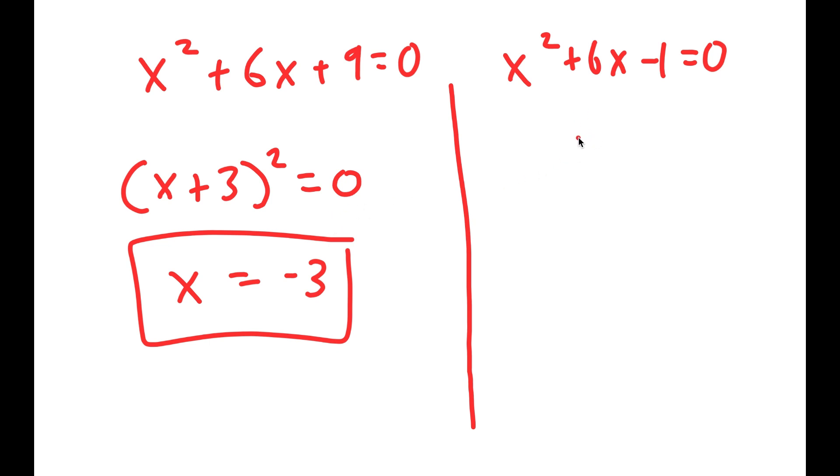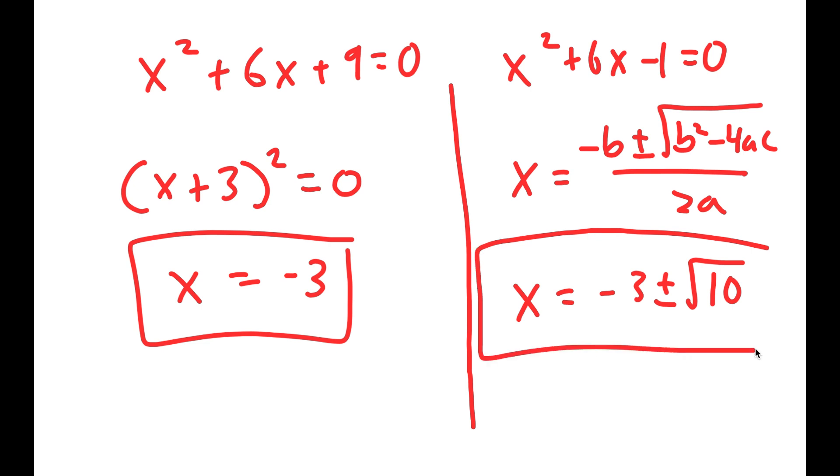For x² + 6x - 1 = 0, I can use the quadratic formula. The quadratic formula is -b ± √(b² - 4ac) all over 2a. If I plug these values into the quadratic formula, I get x equals -3 ± √10. These are two more solutions to this equation.